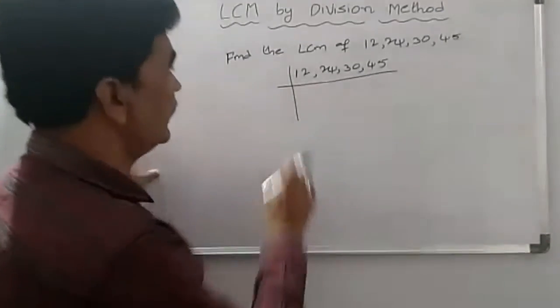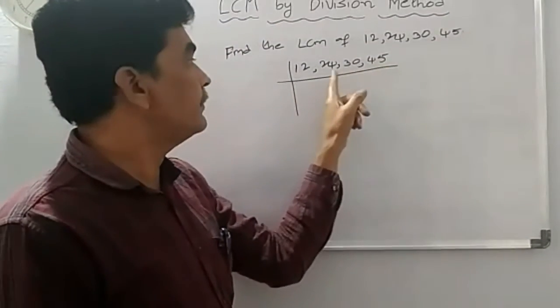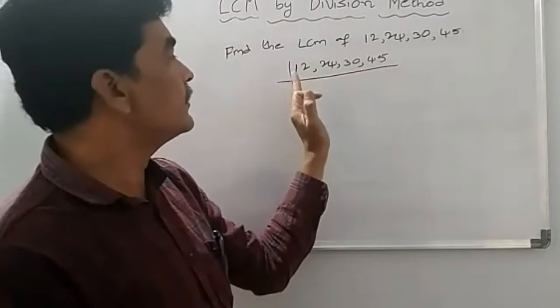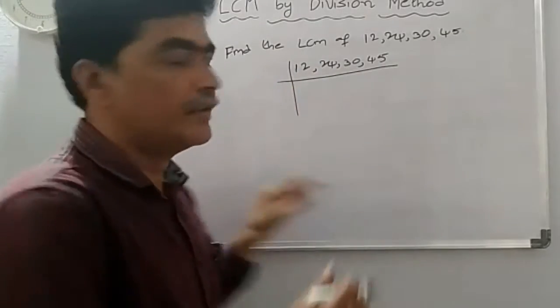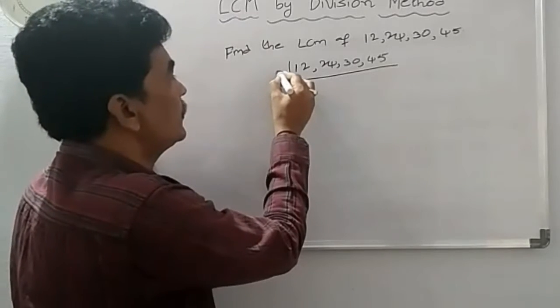Then, we check the numbers. At least one of them is divisible by small prime number. Now, smallest prime number, 2.